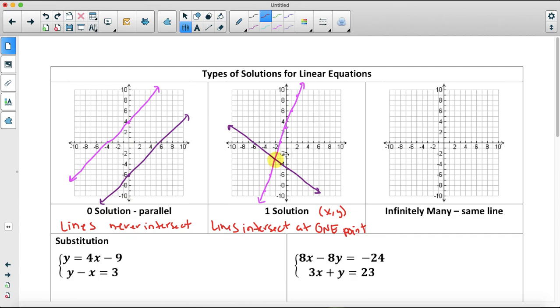But what if the slopes are the same and the y-intercept is the same? So if we have the exact same line, the same y-intercept and the same slope, that means that these are the exact same line. If they intersect at all points, then it's called infinitely many solutions, meaning that they have the same line.